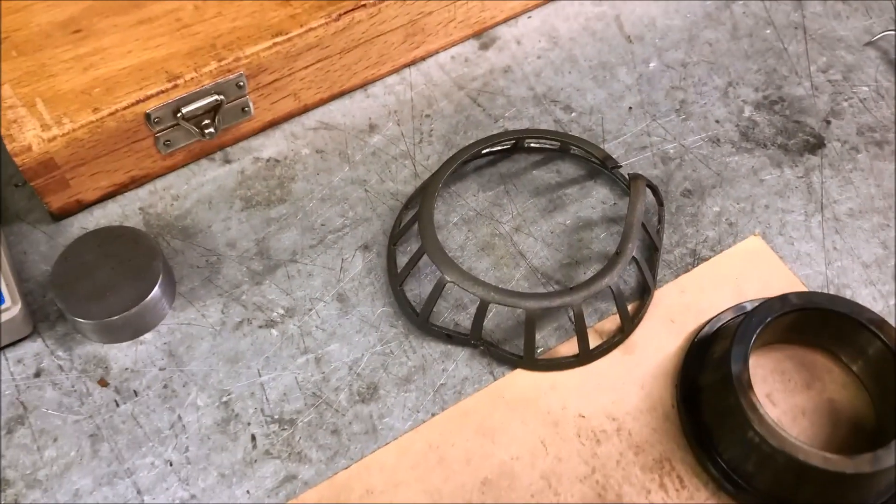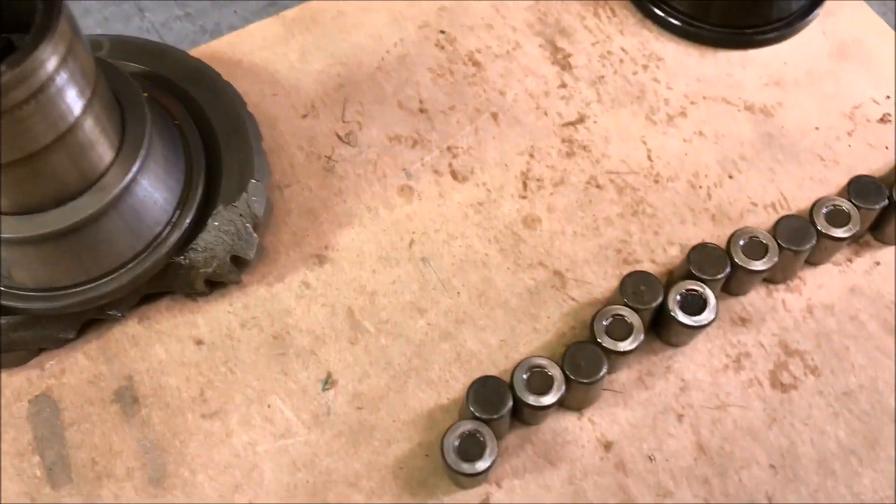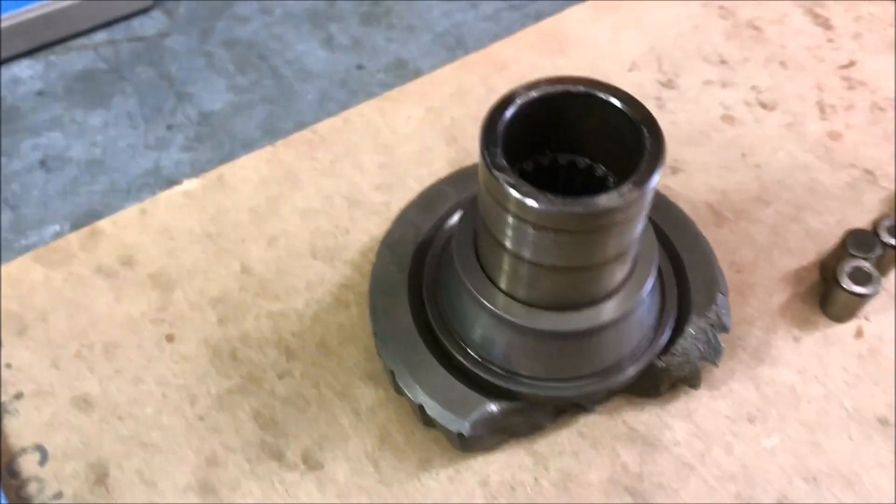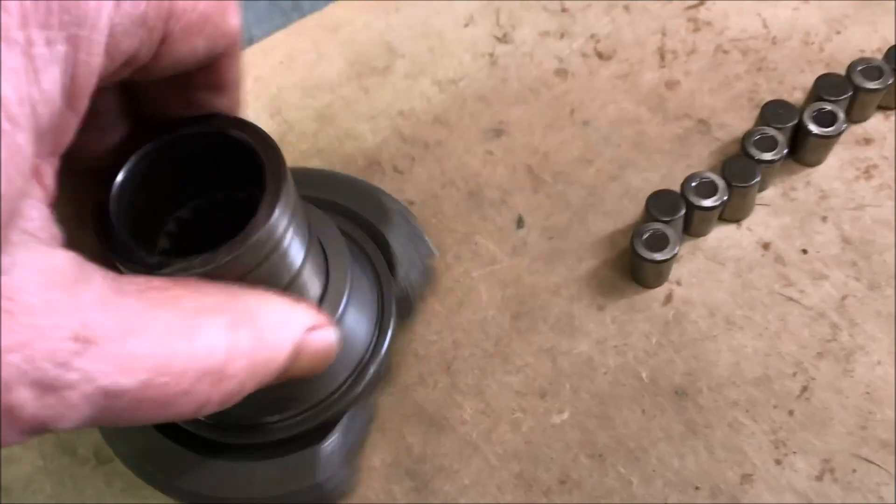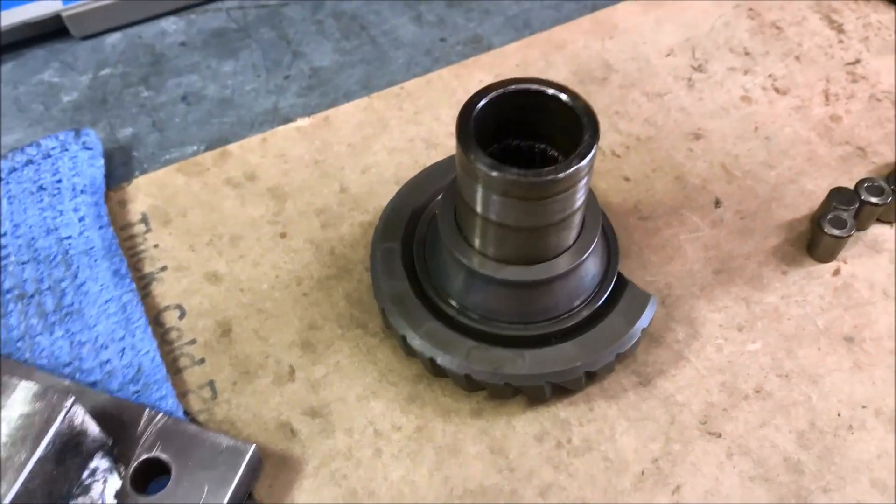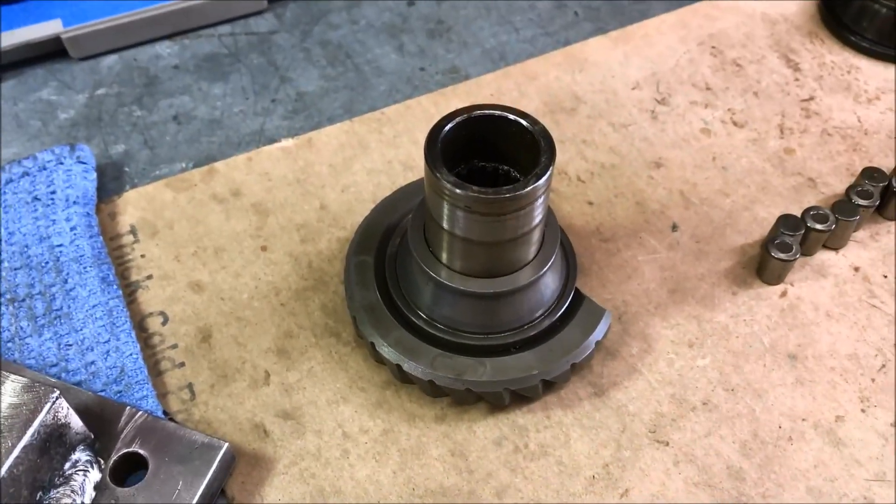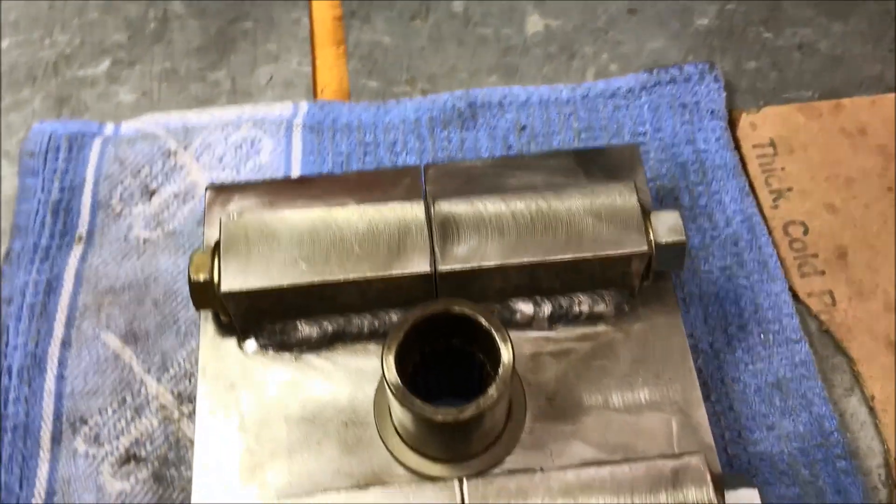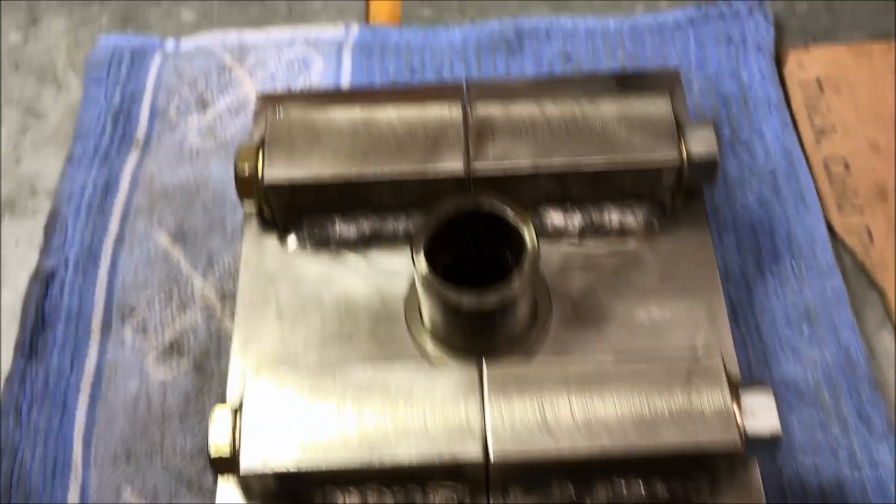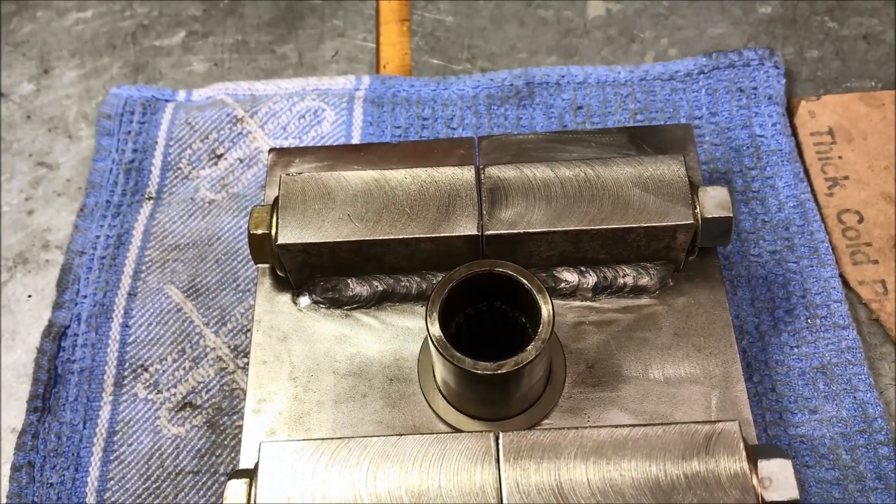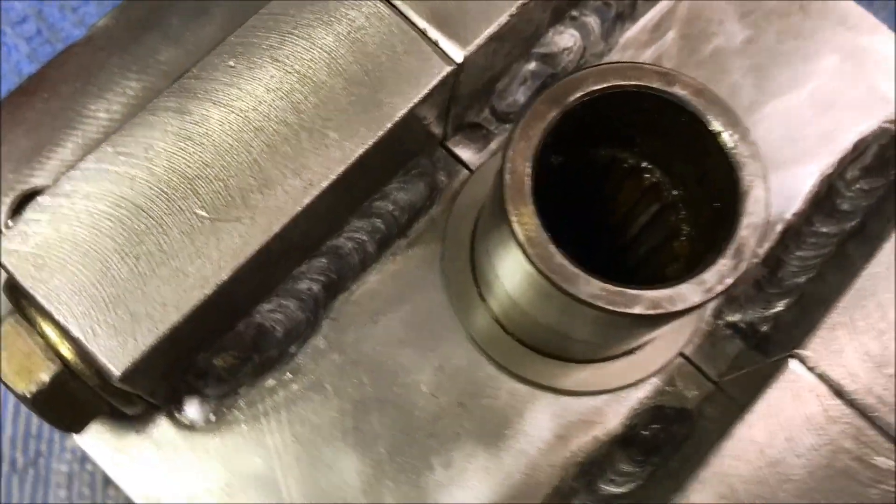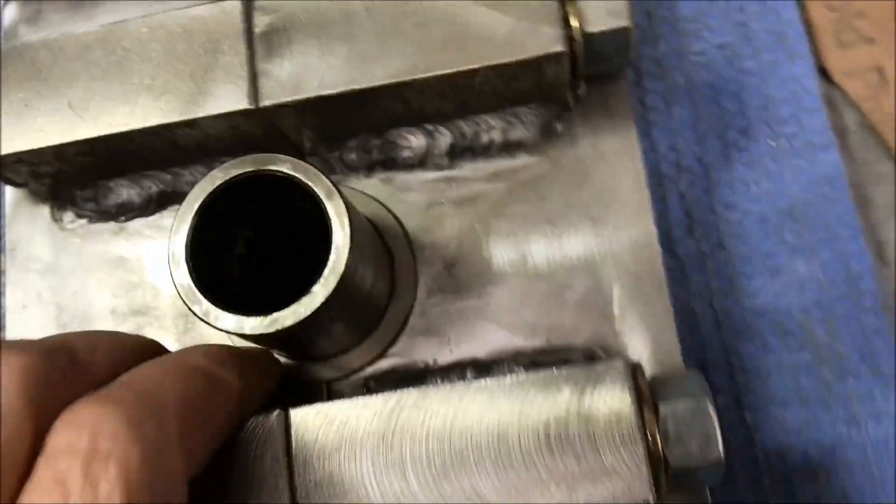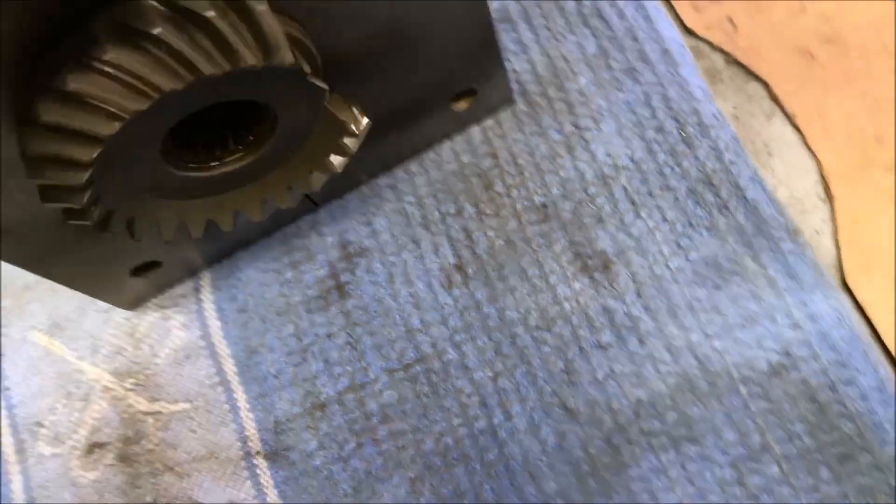We got our bearing. Went ahead and cut the cage off, rollers are out, got the inner race there ready to go. Let's see if we can clamp this up. We got it in there, we snug down our bolts, not super tight, just a little bit past snug. Here's what the bottom looks like.